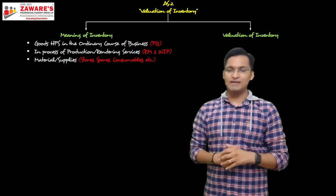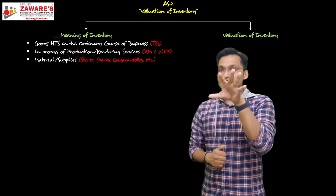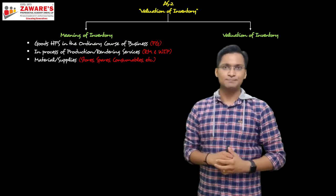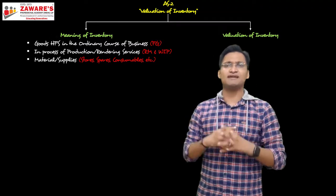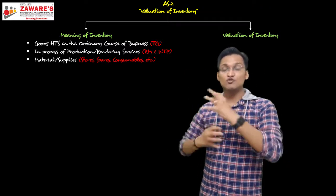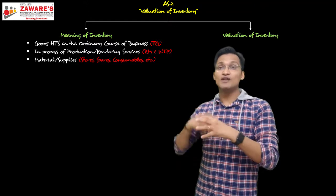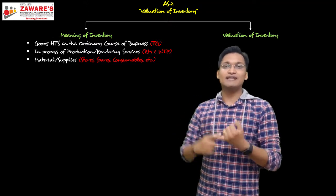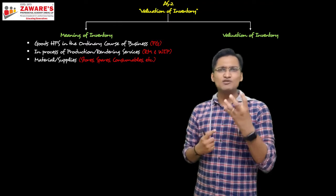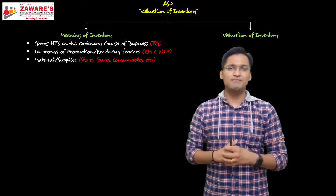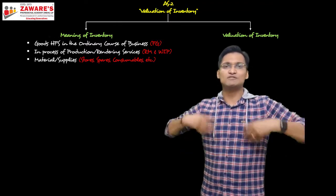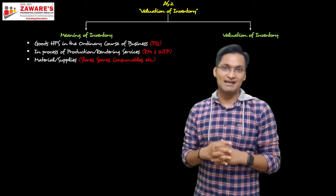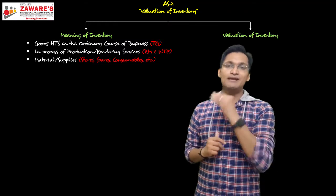Materials and supplies means stores, spares, consumables, etc. In large factories, to keep machines running, they need lubricants, oil, greases, and small tools kept on standby so that if a machine breaks down, they can be used immediately. The stock maintained for all of these is also called inventory. Similarly, polishing machines used to finish goods like stainless steel utensils require polishing material — like shoe polish and wax — the stock of that material also constitutes part of inventory.